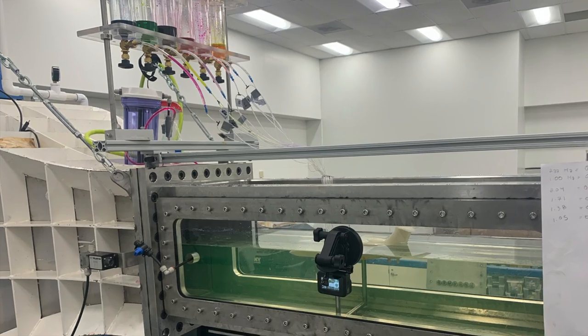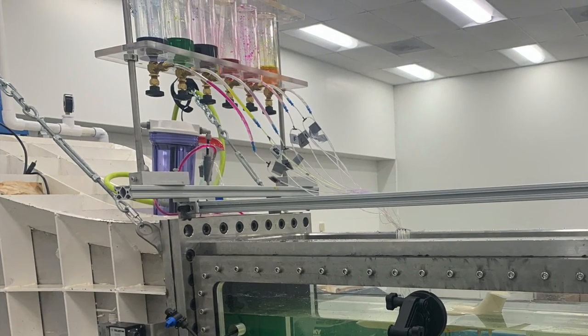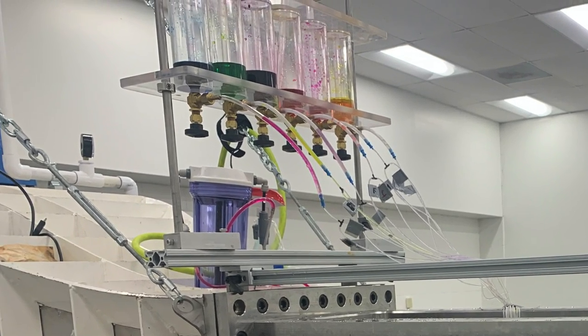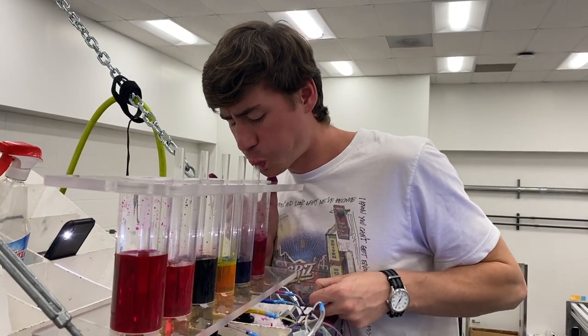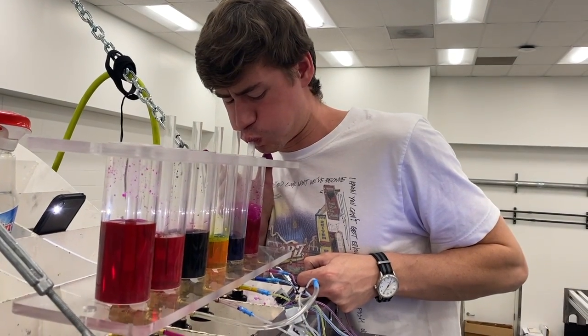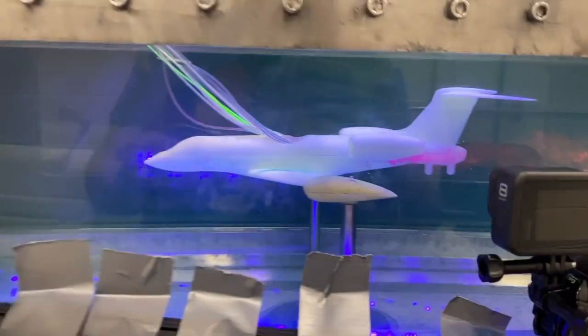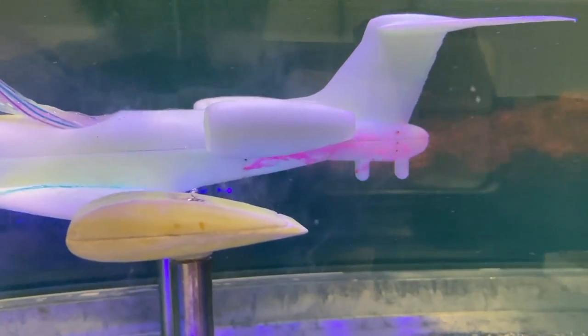We used two different pieces of equipment to inject the dye. For the multi-dye experiments, we used a gravity-fed system. For the dye to inject correctly in this system, the tunnel must be run at very low velocities. There are six reservoirs of dye that connect to six quarter-inch Tygon tubes.